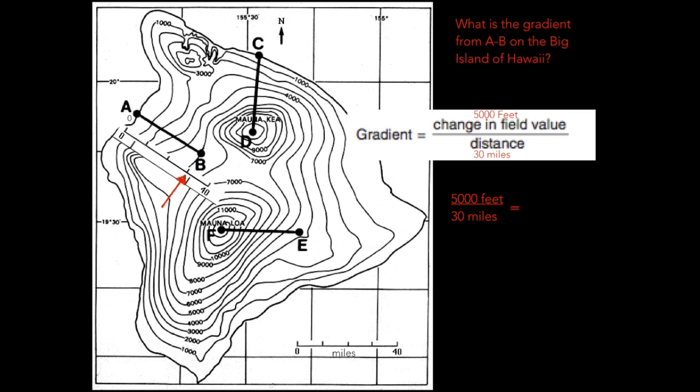And when we do the calculation with a calculator, we get 166.7 feet per mile. And notice I'm writing my units when I substitute so I know my units in the answer.